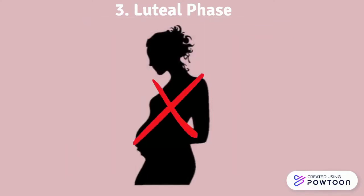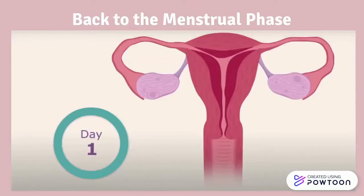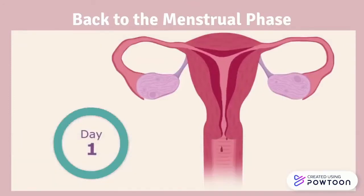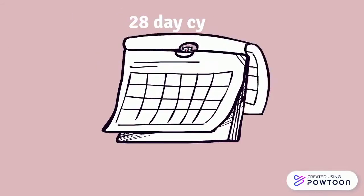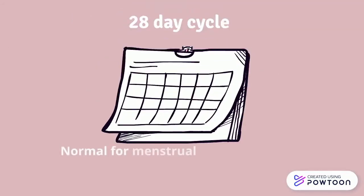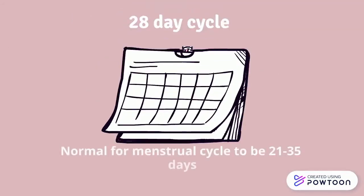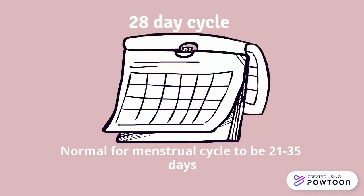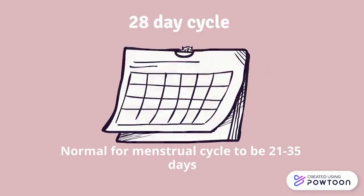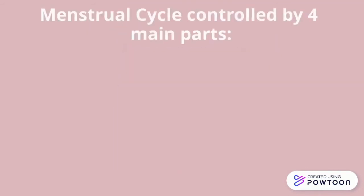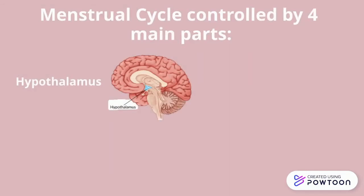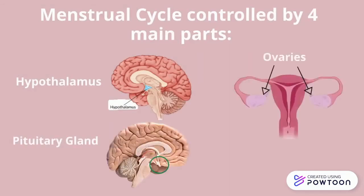If a pregnancy does not occur, we cycle back into the menstrual phase and shed the lining, along with the egg, through our period blood. In total, this cycle is supposed to occur every 28 days, however it is normal for it to range anywhere from 21 to 35 days. This menstrual cycle is controlled by four main parts of the body: the hypothalamus, the pituitary gland, ovaries, and the uterus.